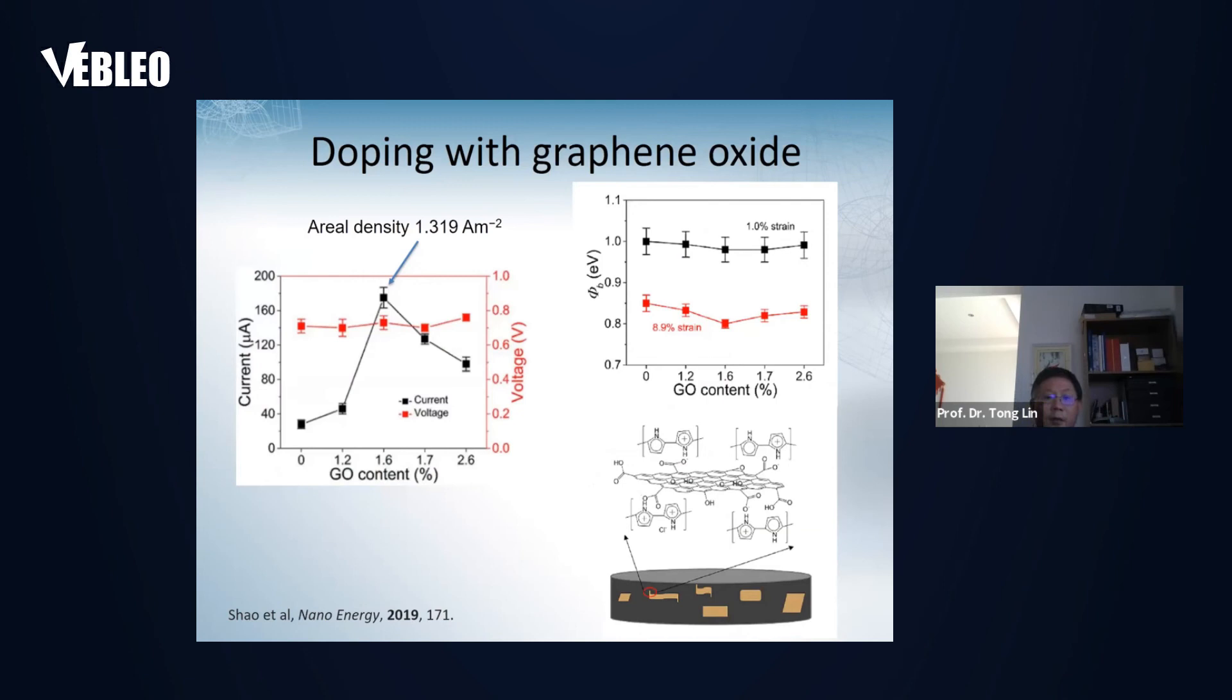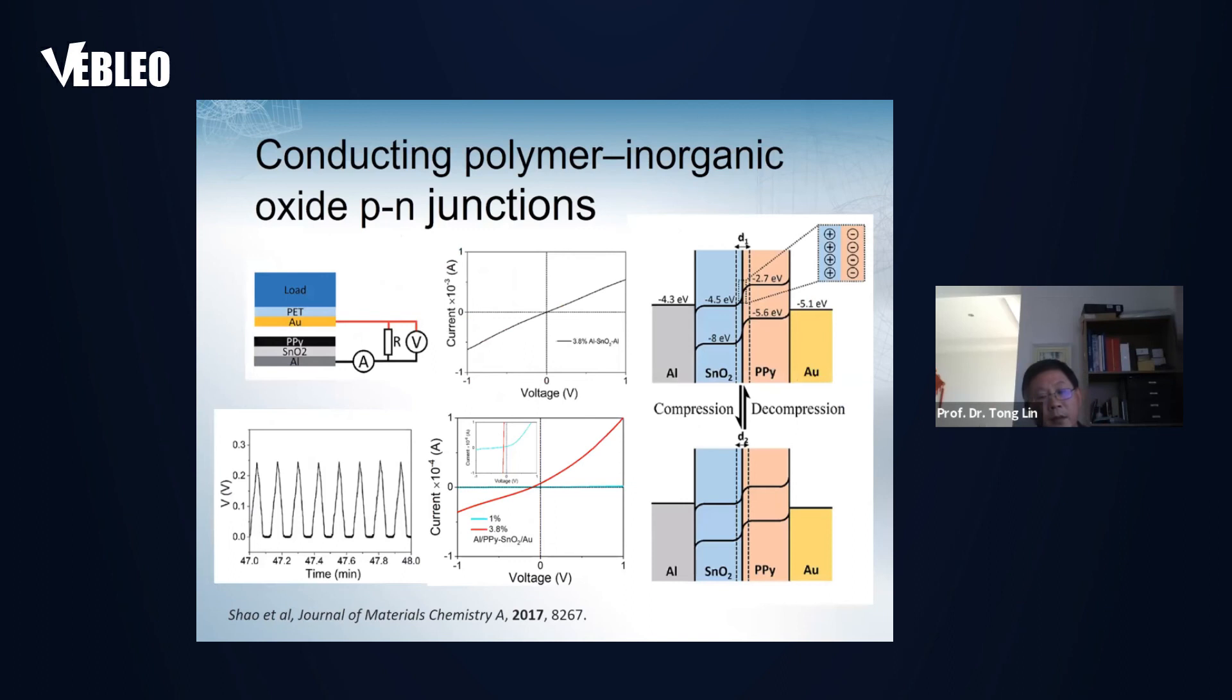We also use graphene oxide to dope this conducting polymer. We found very small content of graphene oxide can significantly improve the current output. The PPY containing 1.6% graphene oxide can improve six times in the current output, while the voltage maintains the same. The reason for this is because it not only reduces the internal resistance, but also leads to larger reduction in the barrier height in compression state.